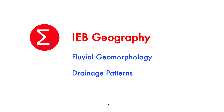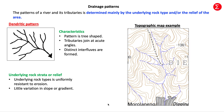There are many types of drainage patterns, and it's important to note that the patterns of a river and its tributaries are determined mainly by the underlying rock type and/or the relief of the area.